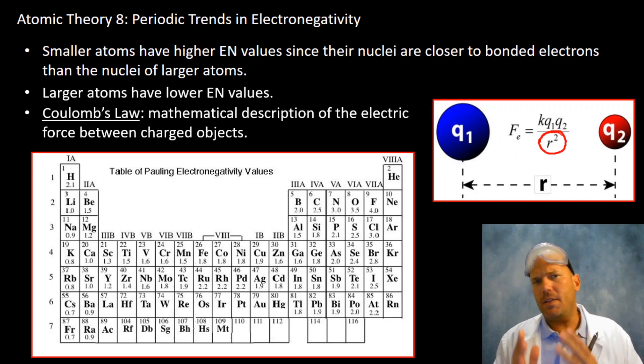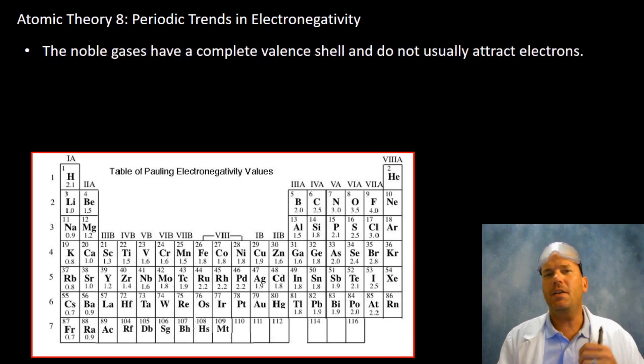The Q1 and the Q2 are referring to the magnitude of the charges between, in this case, the subatomic particles. We'll talk about Coulomb's more later. Let's move on and continue talking electronegativity.